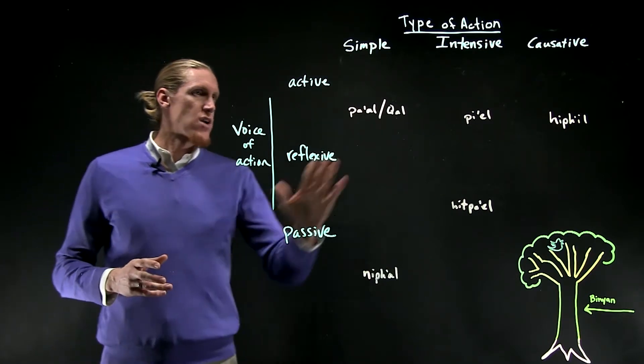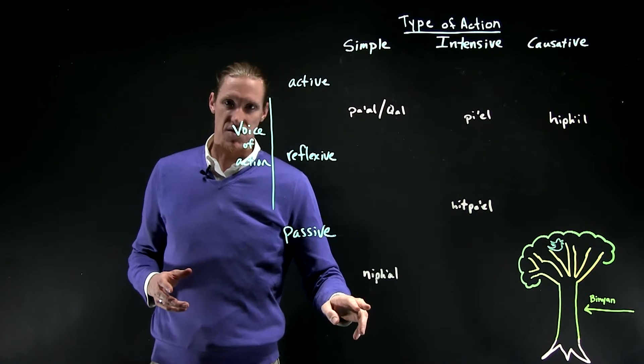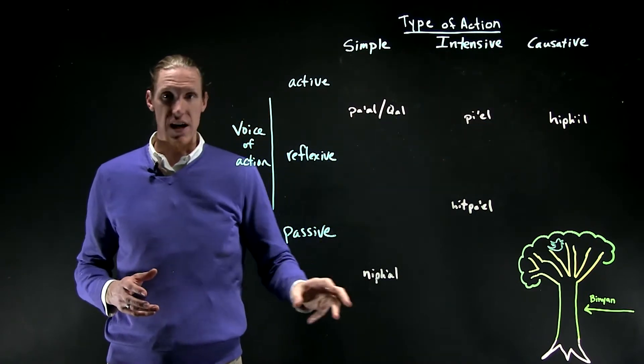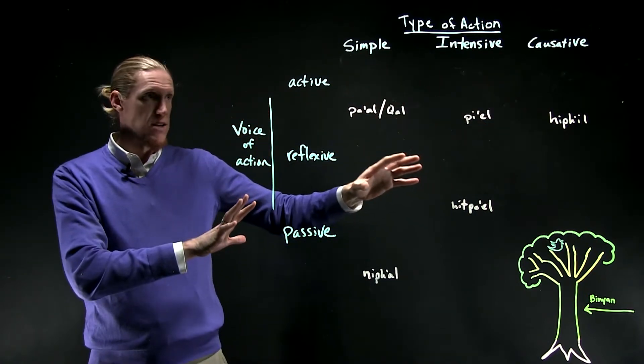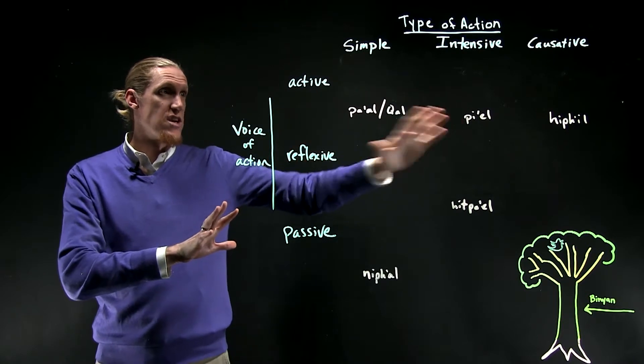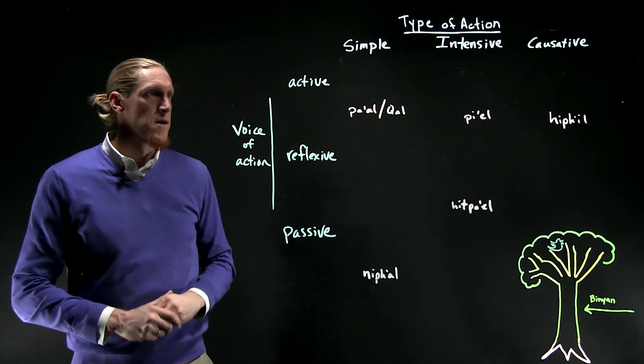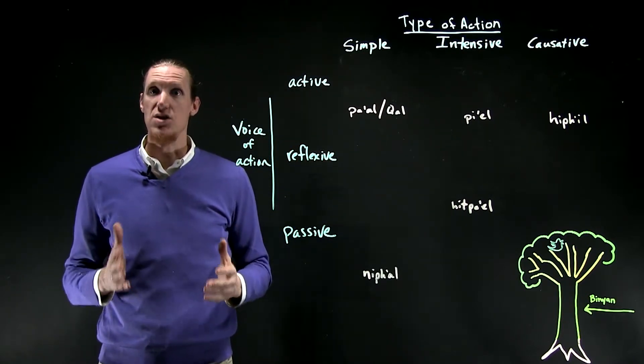So here are our five verb stems. Here are the names of them in each place, and we'll write out in a minute the name of each stem in Hebrew. But let's just take the English verb, to wash.